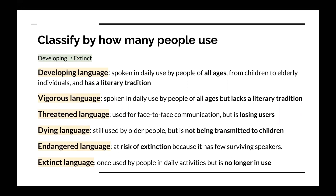Next is classifying by how many people use it, organized by the order of developing to extinct. Developing language is spoken in daily use by people of all ages, from children to elderly individuals, and has a literary tradition. Vigorous language is spoken in daily use by people of all ages, but lacks a literary tradition.